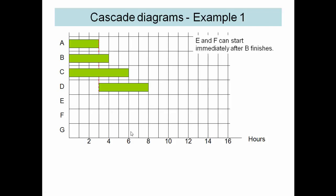E and F can both start immediately after B finishes. Again note the broken line here. G is dependent on C, D, and E, so it can start after D finishes.